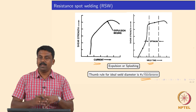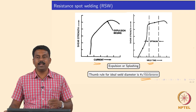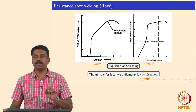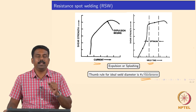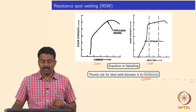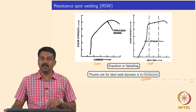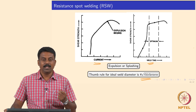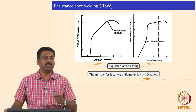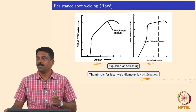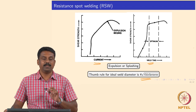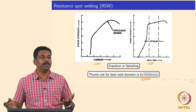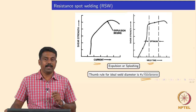Developing welding process parameters for resistance spot welding is a very laborious experiment. If you are developing a steel for an application, you must generate weld growth curves for varying thicknesses and provide them to a customer so they can choose the correct welding parameter for a given thickness. Different thicknesses are used in different parts, so the same welding parameters cannot be used throughout.